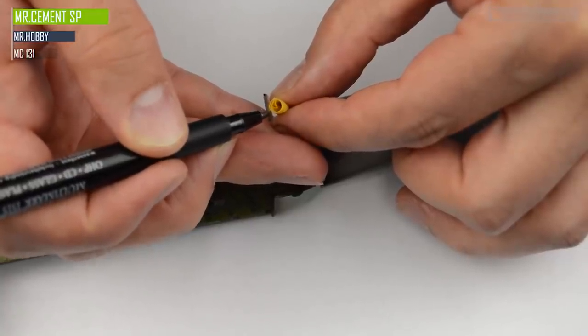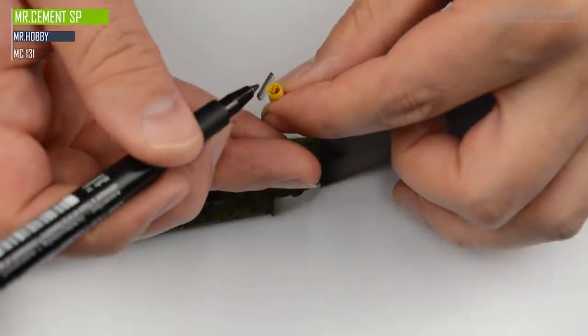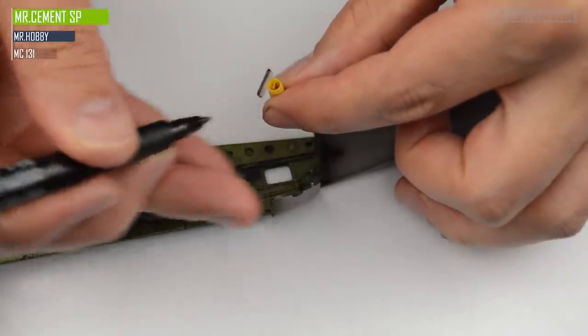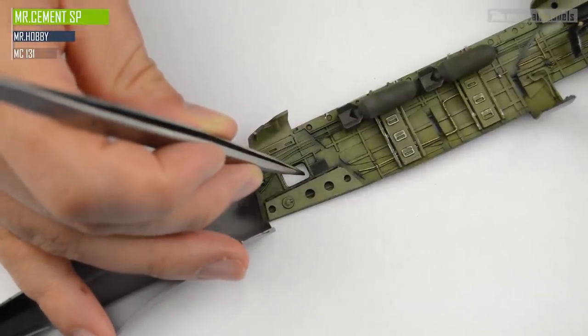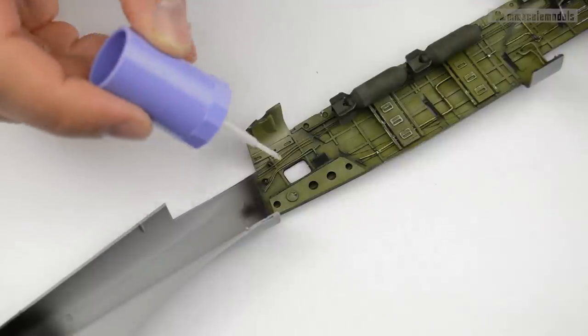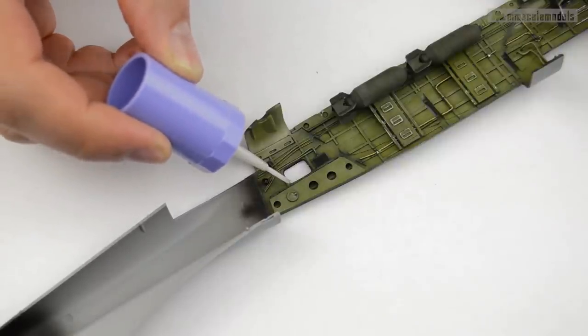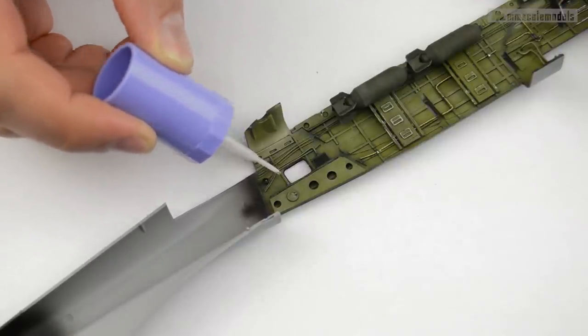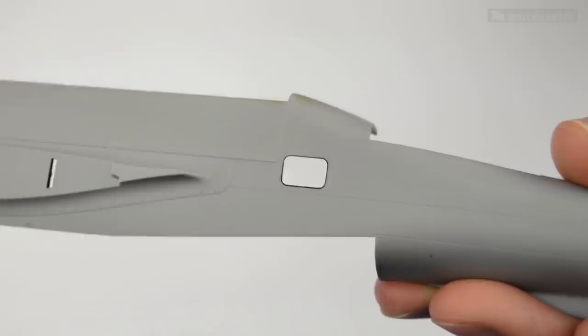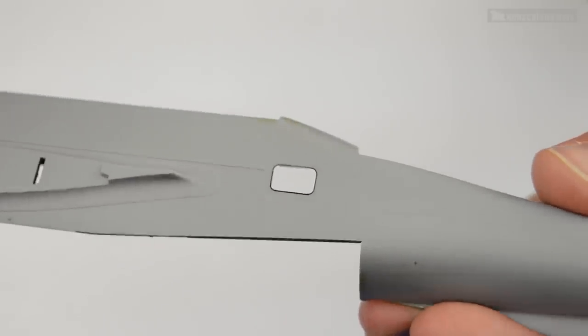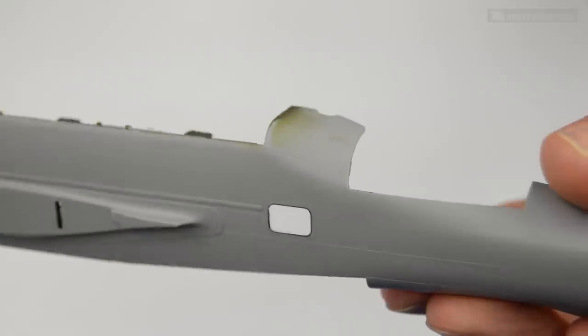For the window on the gunners compartments, first I'm going to paint the edges of the part with black marker. After ensuring that the detail is properly in place, I am applying small amounts of Mr. Cement SP very carefully, making sure not to touch the transparent plastic but its surroundings so that the glue can flow into the joint. Somehow the black edges create the impression of much thinner part than it actually is.